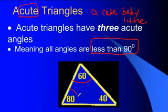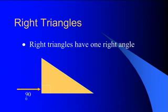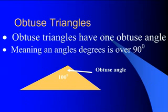In an acute triangle, all three angles are less than 90 degrees. Right triangles have one angle that is exactly 90 degrees — as long as you have one 90-degree angle, it is considered a right triangle. Obtuse triangles have one obtuse angle, and the obtuse angle is over 90 degrees.